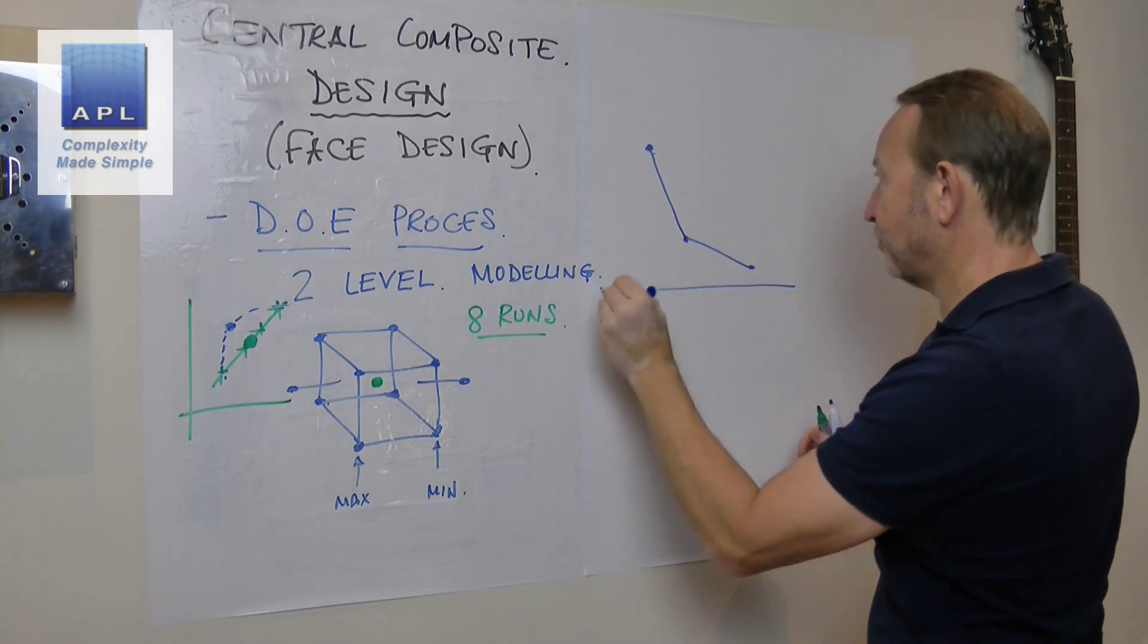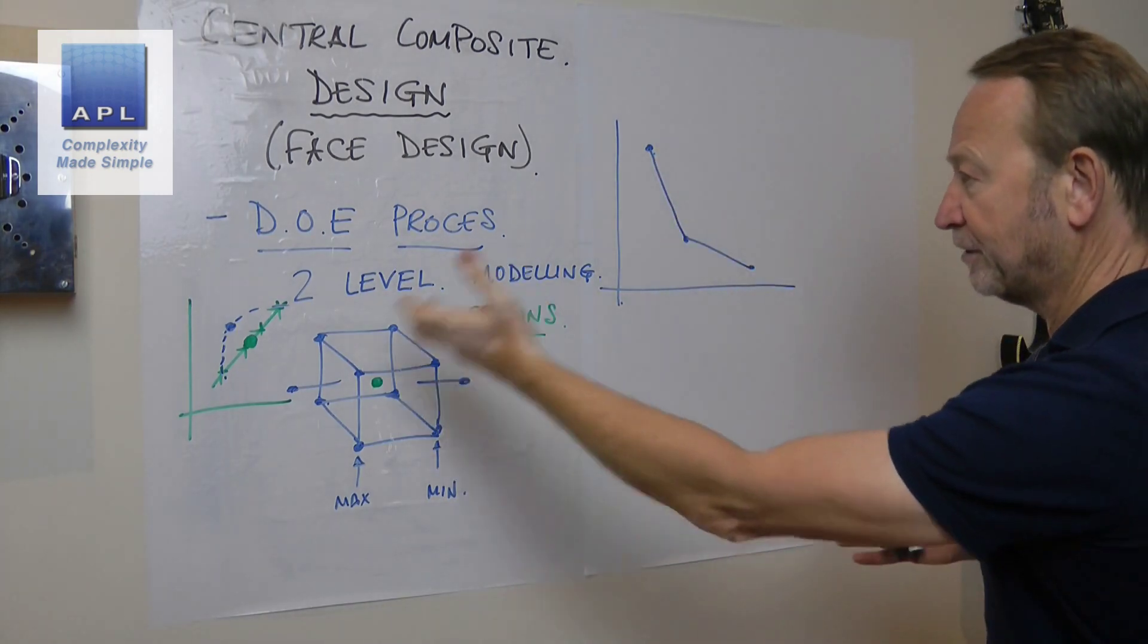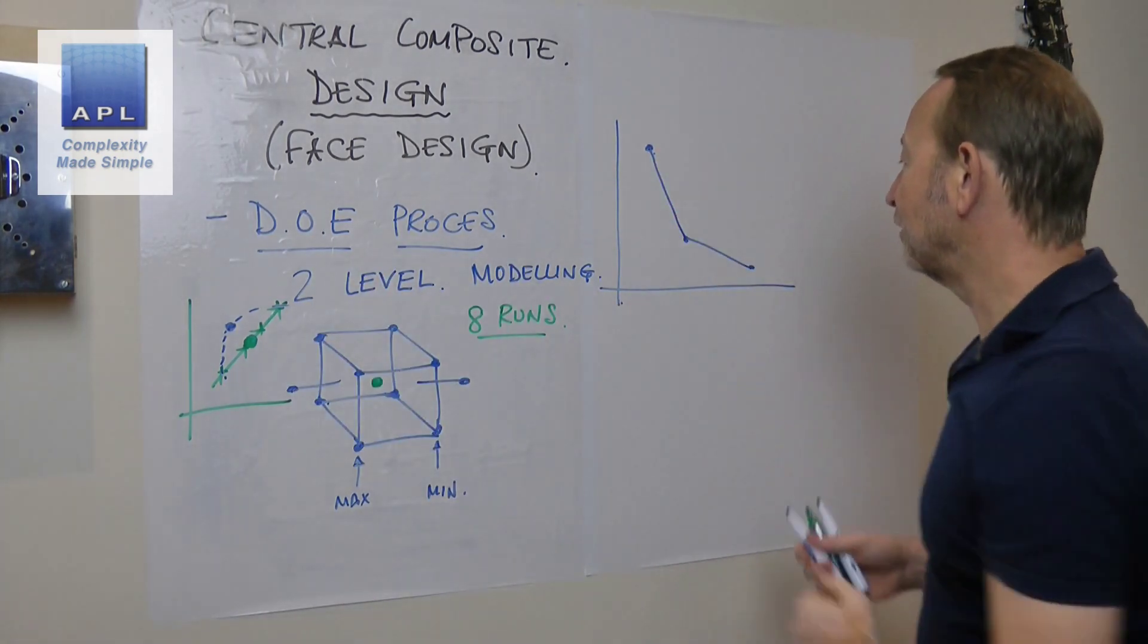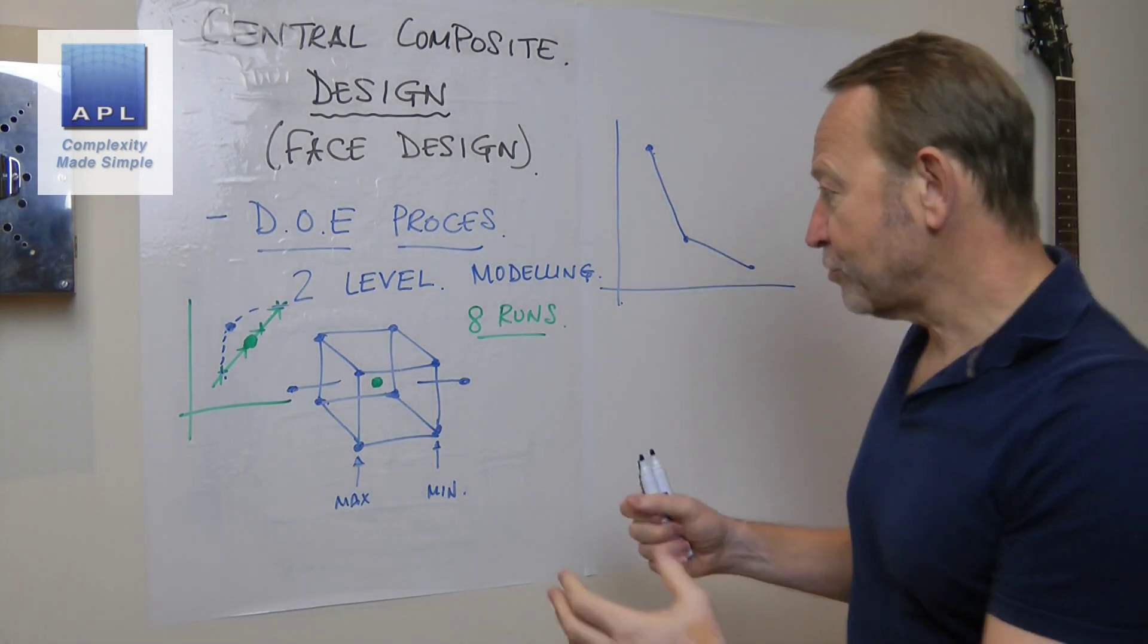So what I end up with is I end up with a model that does this. So I end up testing in three places and I end up with diagrams that look like this.